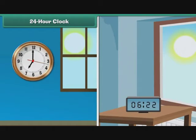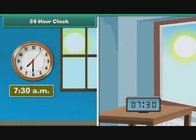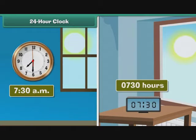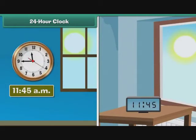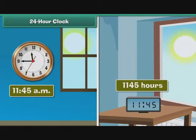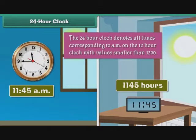Both the 12-hour and 24-hour clocks denote the first 12 hours of the day in an identical manner. 7:30 a.m. on the 12-hour clock is represented as 0730 hours on the 24-hour clock. Similarly, 11:45 a.m. is represented as 1145 hours. The 24-hour clock denotes all times corresponding to a.m. on the 12-hour clock with values smaller than 1200.